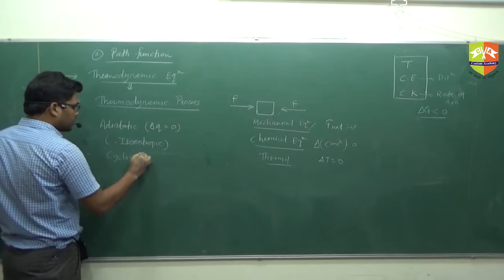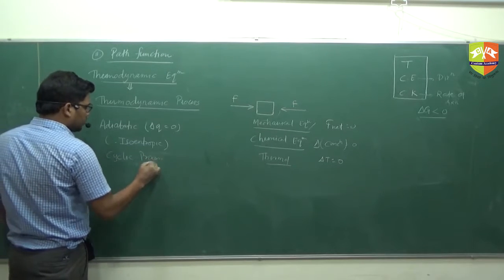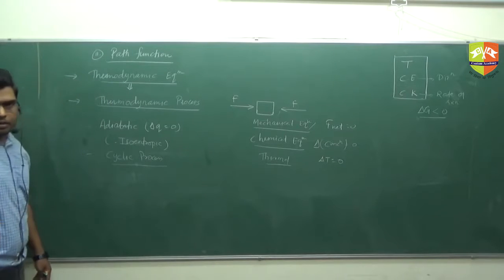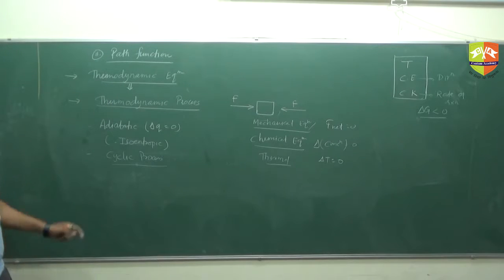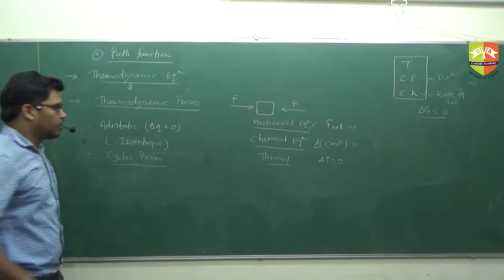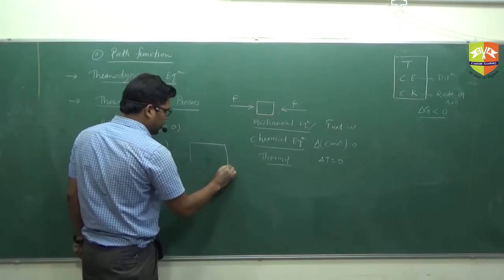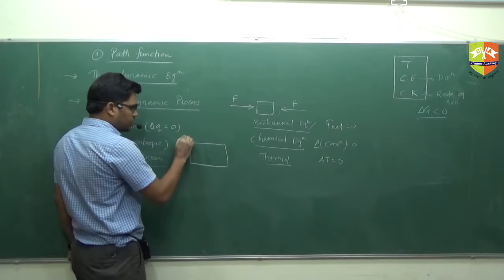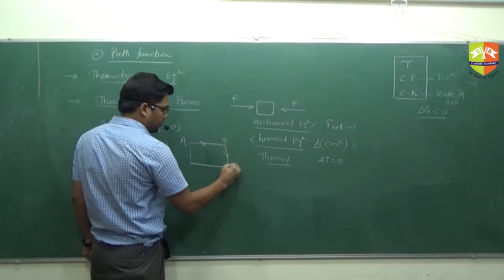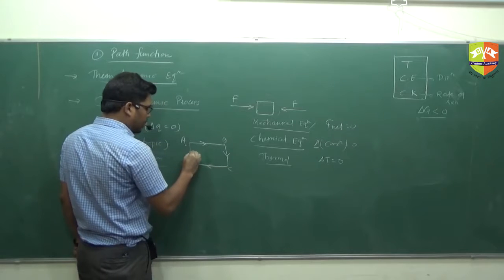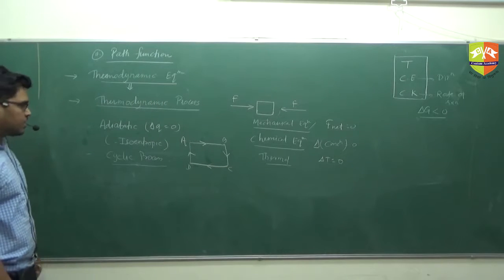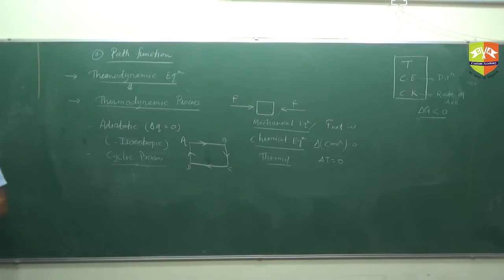What is a cyclic process? In a cyclic process, the initial and final state will be the same. We start from A, go to B, then C, then D, then E — that is a cyclic process where the initial and final state is the same.